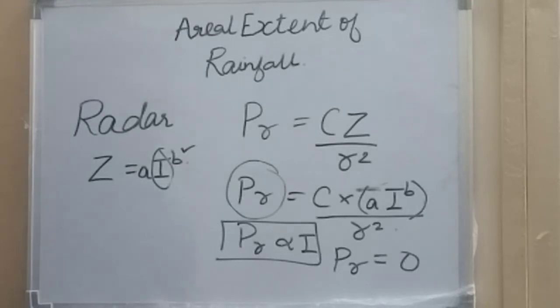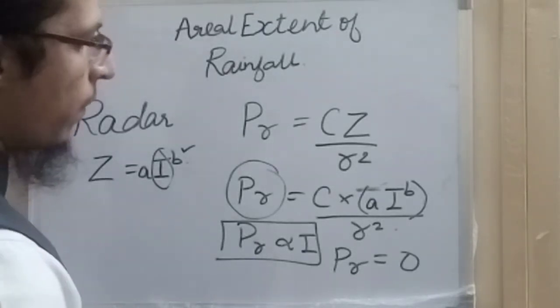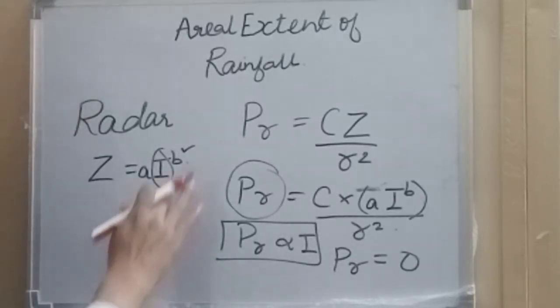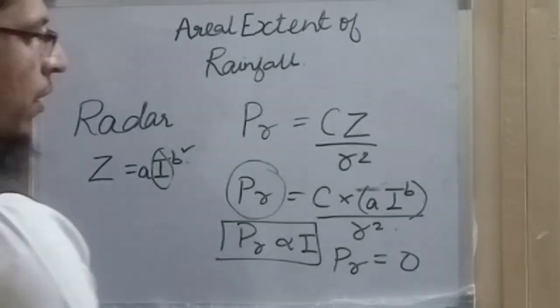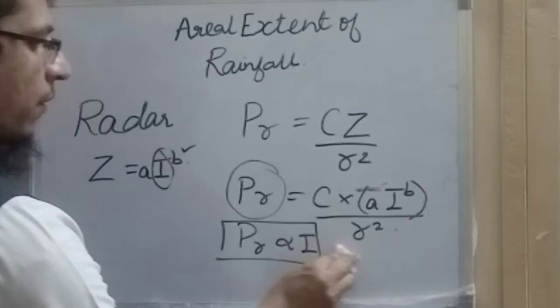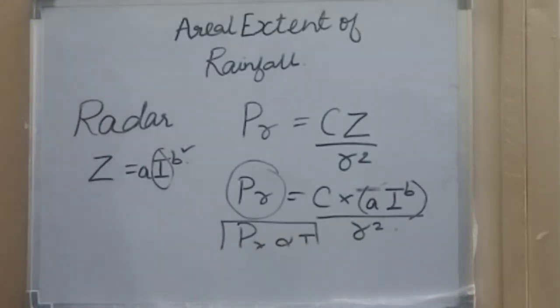In this way we can use this instrument, radar, for measuring the aerial extent of rainfall and its intensity. Even now, Doppler radar can tell us about the velocity distribution of rainfall particles and its intensity.